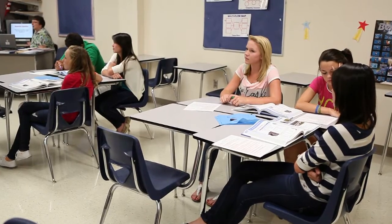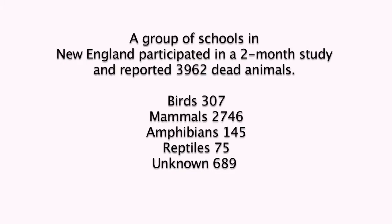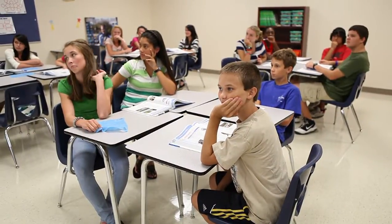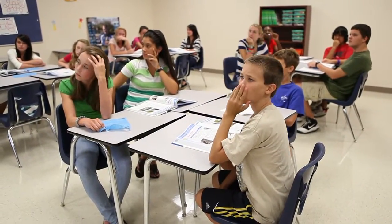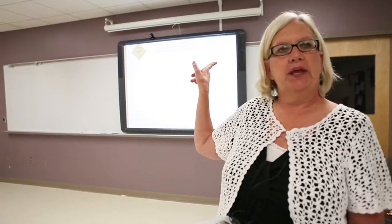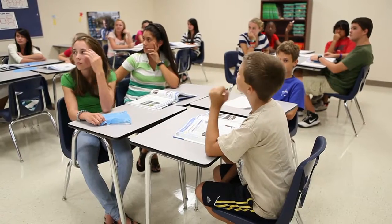So let's look at some data. I have made a chart with some data on it. A group of schools in New England participated in a two-month study, and they reported 3,962 dead animals. Now the way that data is displayed — is that helpful to you?